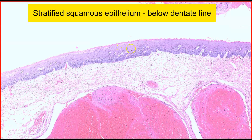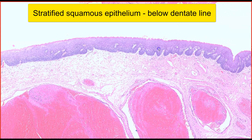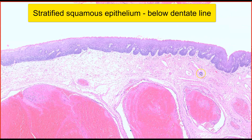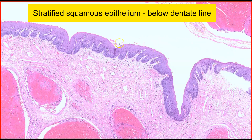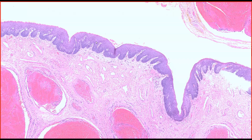If the hemorrhoid is more proximal — for example, above the dentate line — then the overlying epithelium is usually that of large bowel mucosa. Here we can tell, because of the stratified squamous epithelium, that this is an external hemorrhoid, and that means this is below the dentate line.